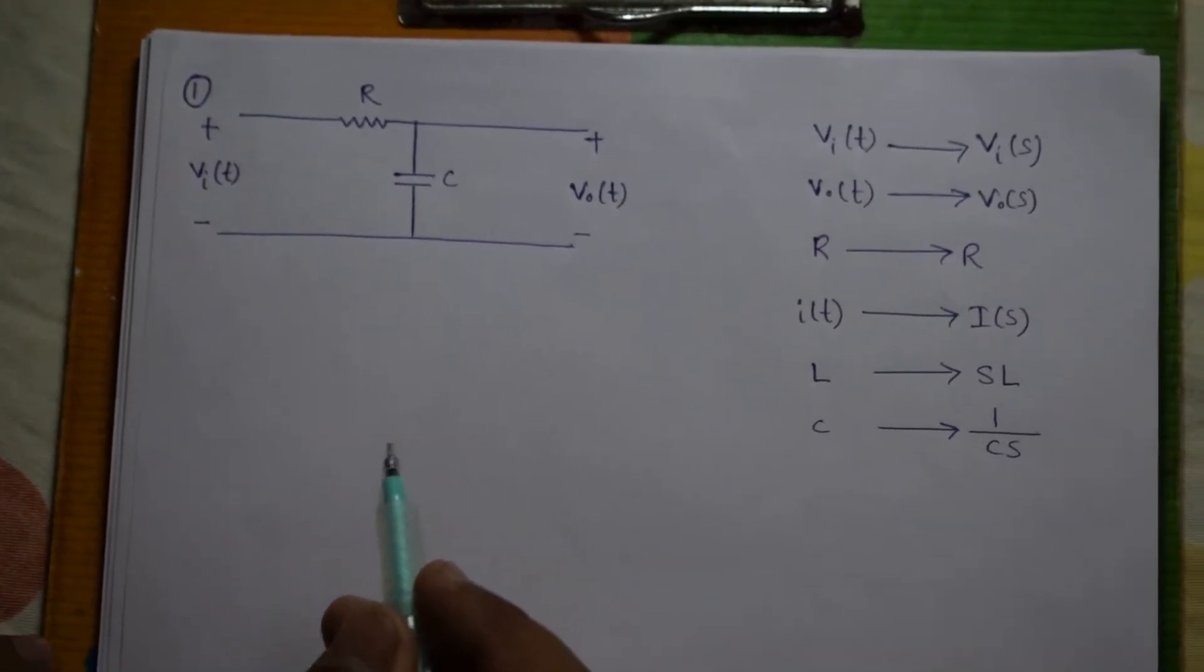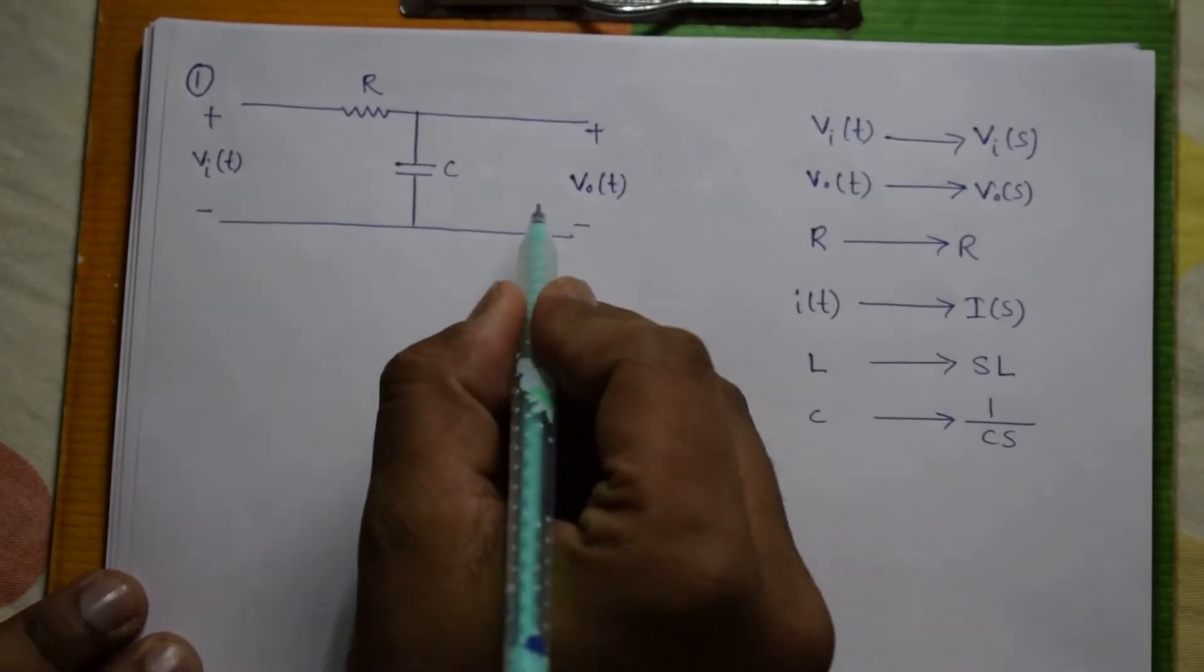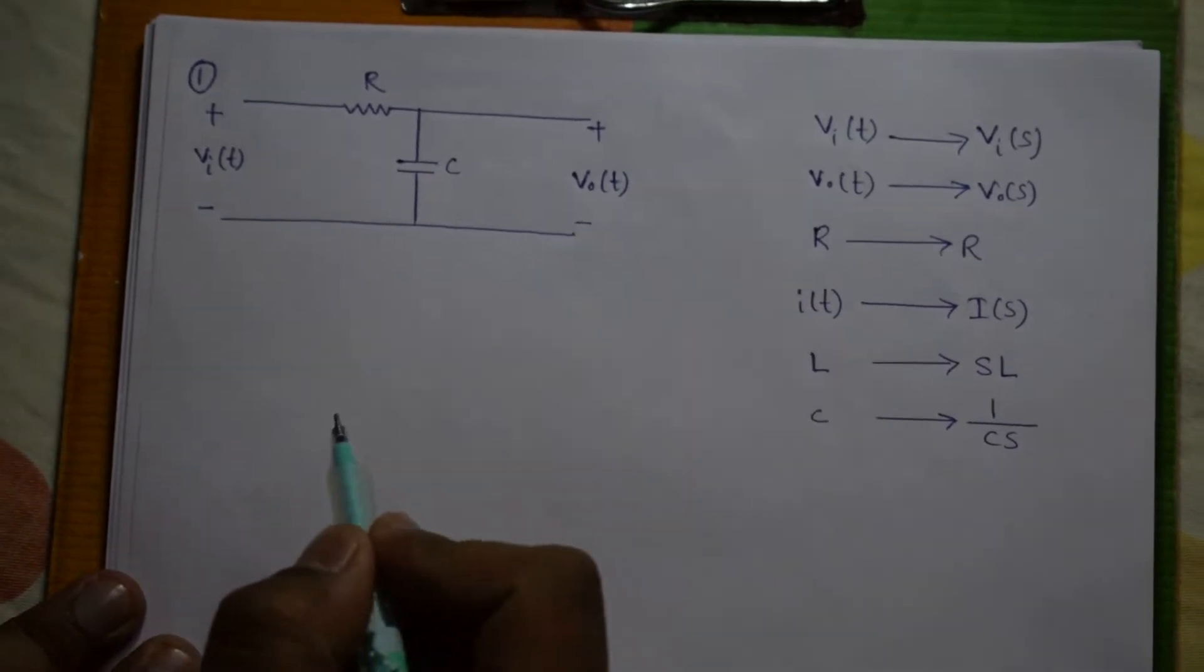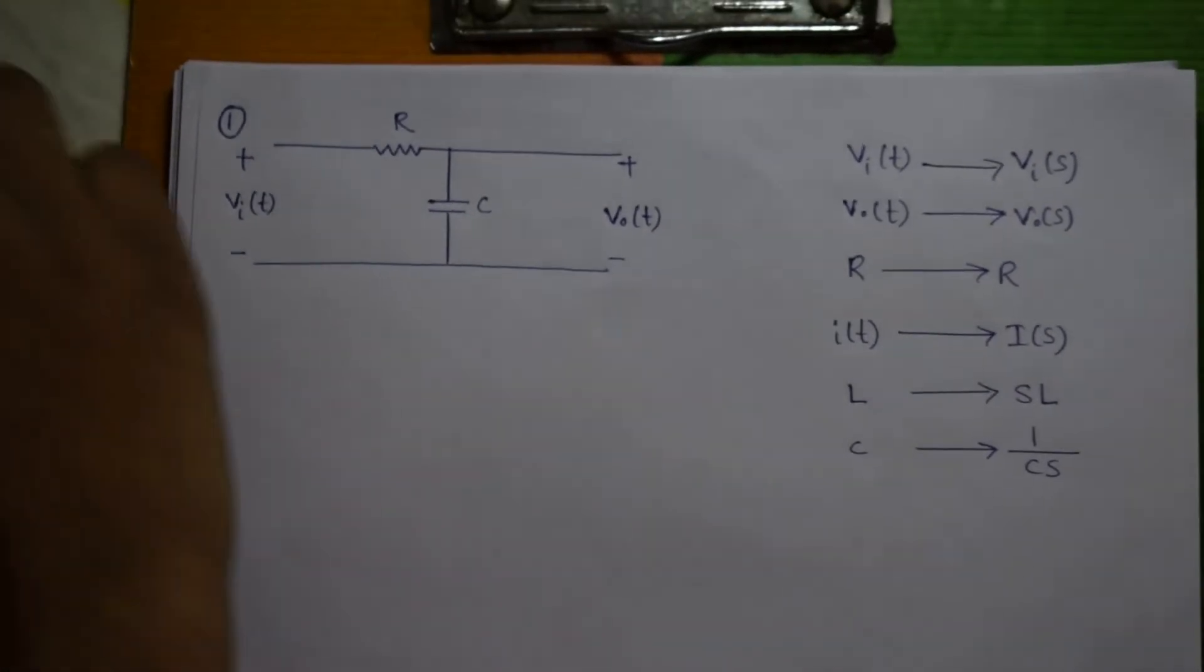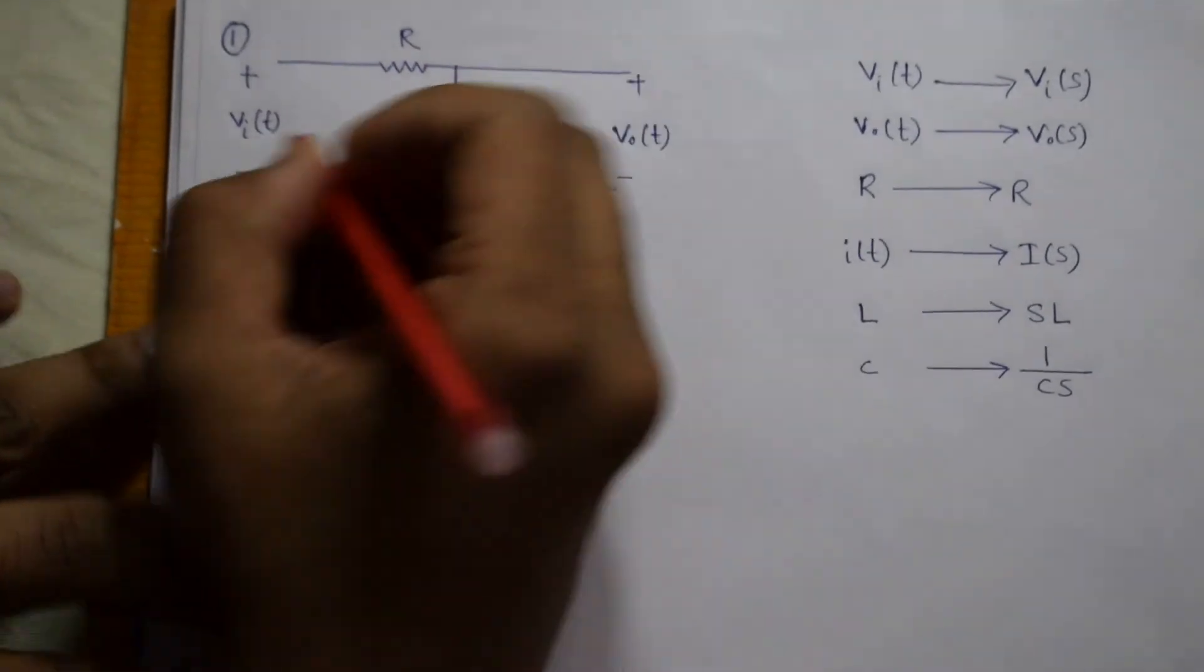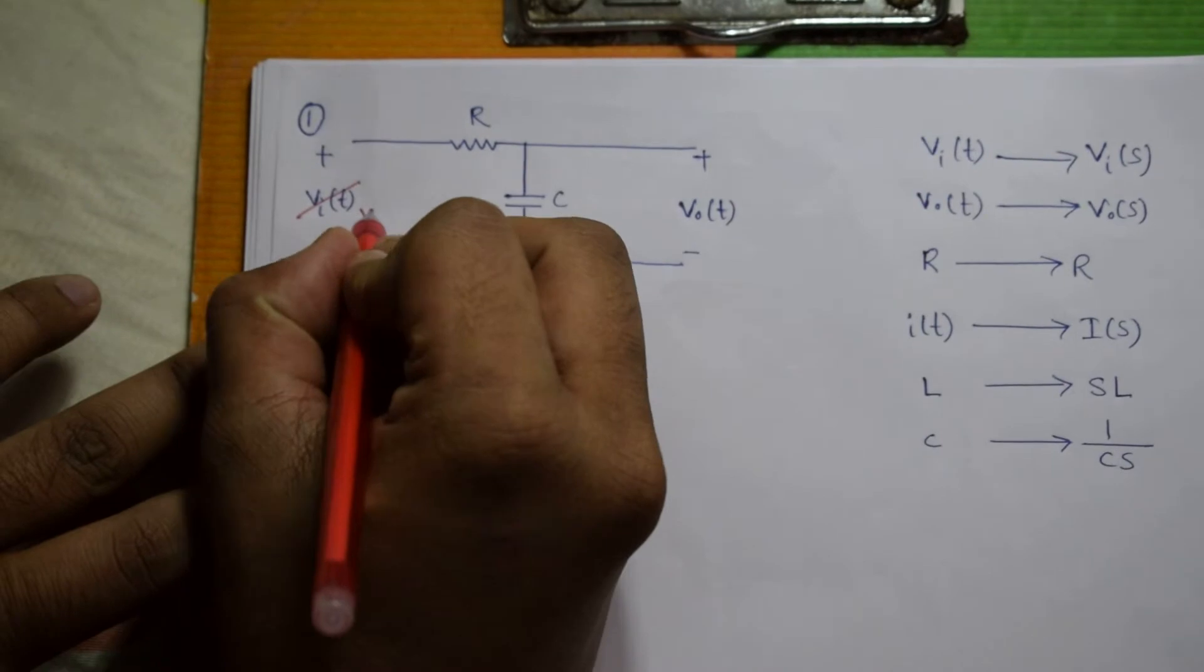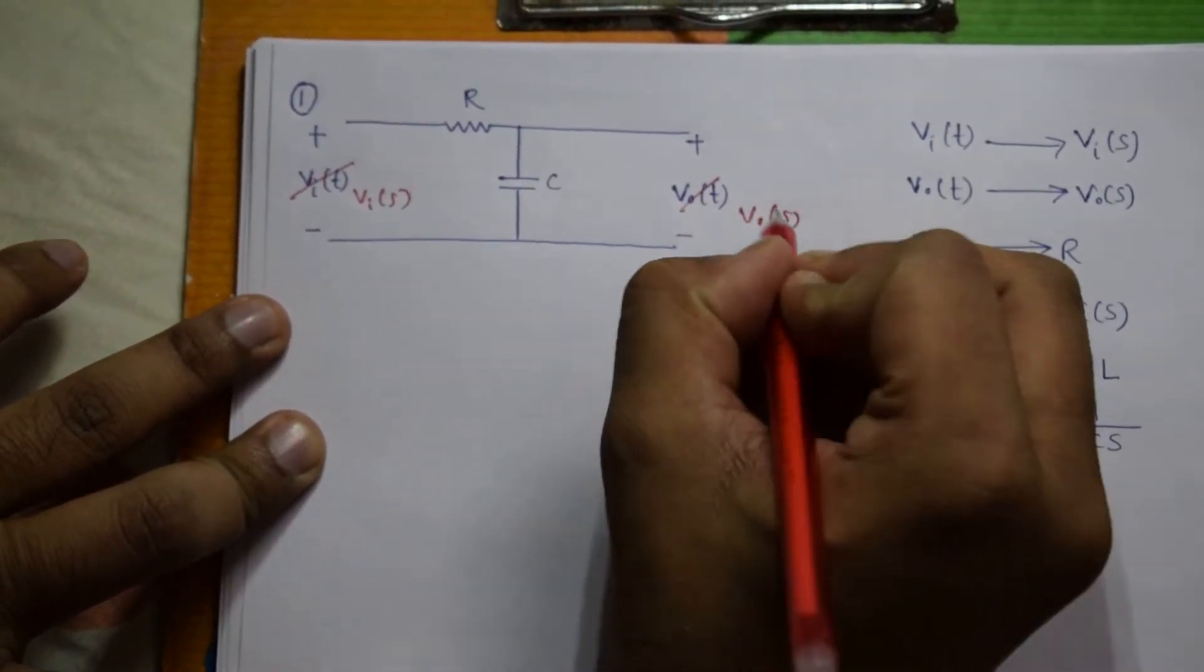So the most important thing in finding the transfer function is to identify input and output. Here Vi(t) is our input and Vo(t) is our output. So our required transfer function is Vo(t) by Vi(t). Now we have to convert all these parameters into Laplace domain.